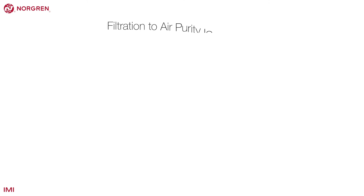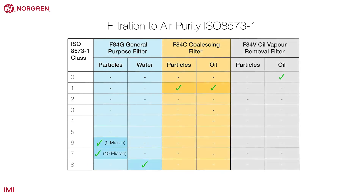The elements used within any of these filters will have a classification code relating to their suitability and micron rating. You can see that the Norgren F84G general purpose filter, for example, has two classifications: one for particles and one for water. Coalescing or oil vapor removal filters would also have two classifications: one for particles and one for oil. Remember, a lack of servicing can lead to a loss of pressure and inefficiencies in the system.